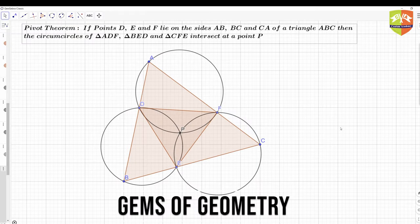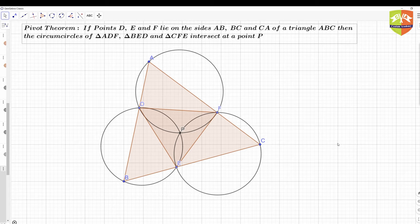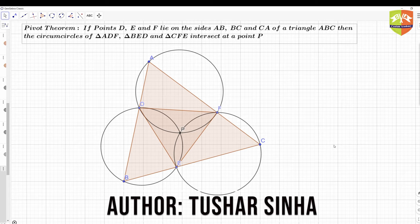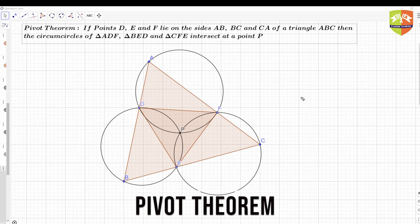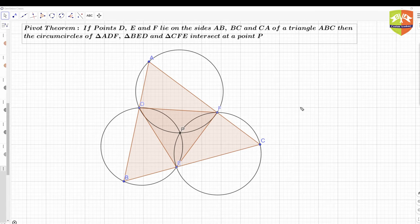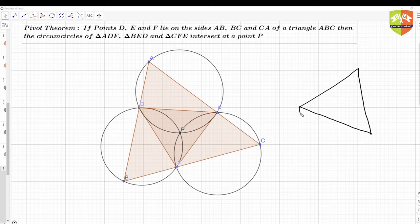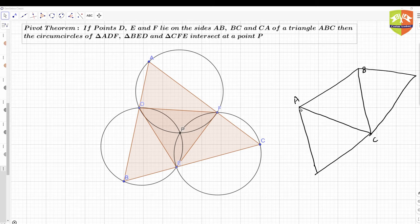Hello friends and welcome to another session on Gems of Geometry. Today we are going to continue with the theorem which we proved in the last session, so if you have not seen that, I would recommend you go and check it out. The previous theorem was about a triangle ABC, and there are triangles drawn on the exterior of the ABC triangle on the sides — so three triangles are being drawn.